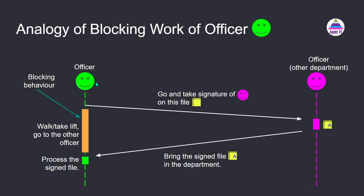In this case, because the first officer himself is visiting the office of the other department, during that time the first officer cannot do any work — shown with orange color — where the first officer walks, takes a lift, and comes back. So during this time, the time of the first officer gets wasted. This is called a synchronous call or blocking call.